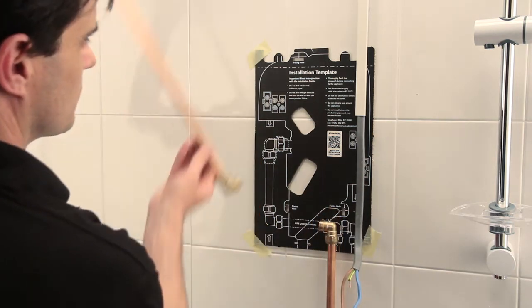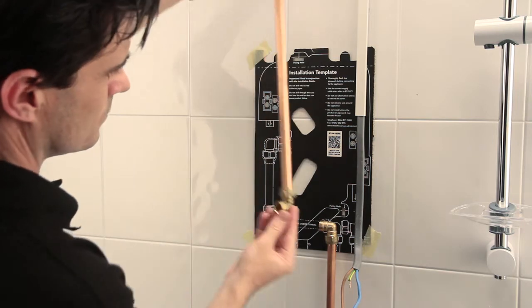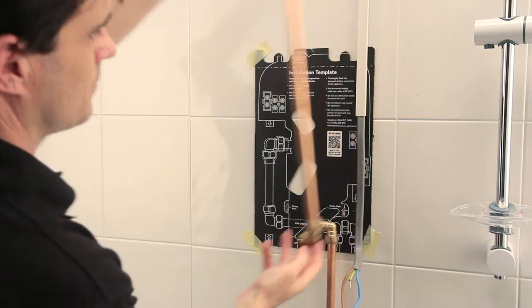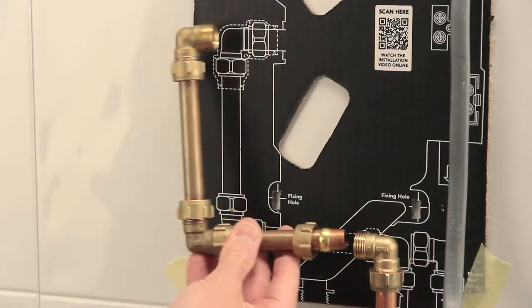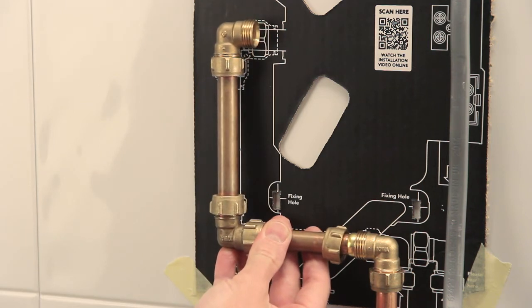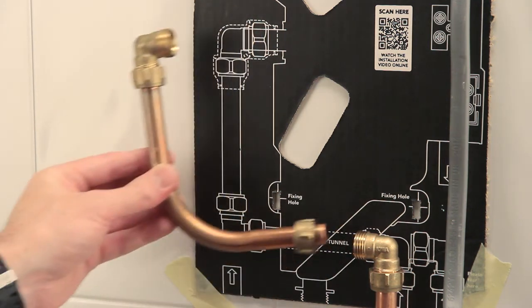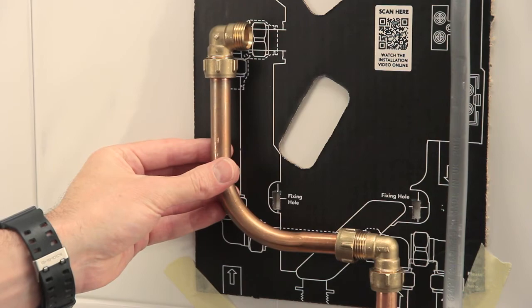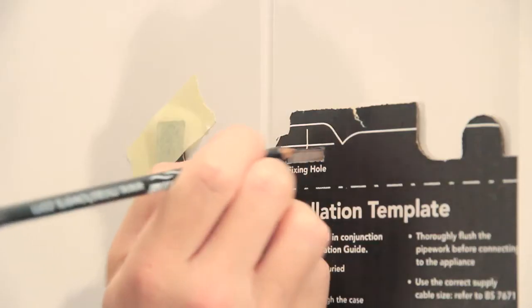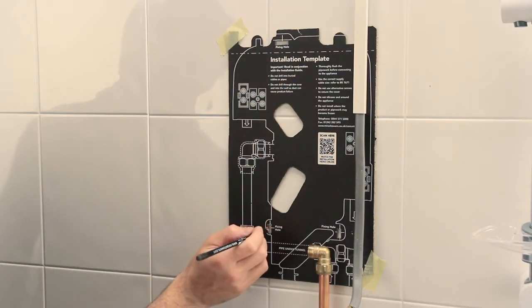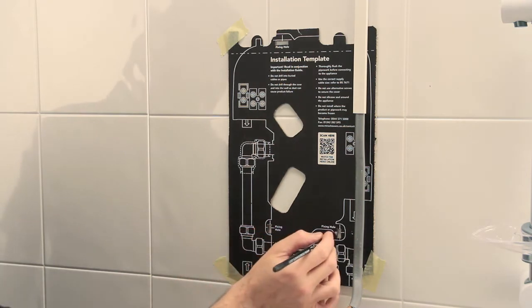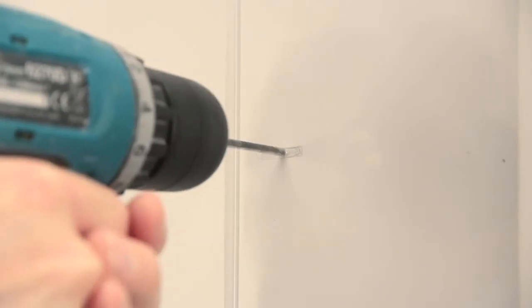Using the template provided, fix and line up with the existing water supply. Ensure that there are sufficient lengths of supply pipe and electrical cable to reach the connection points illustrated on the template. Mark the positions of the new fixing points on the wall. Remove the template and drill and plug any new holes.